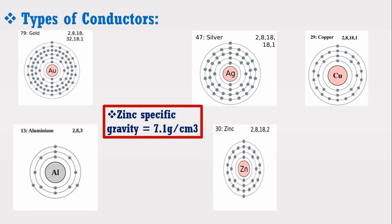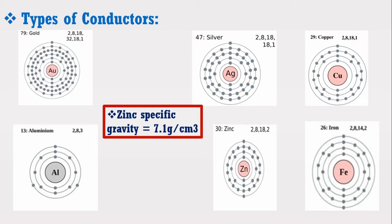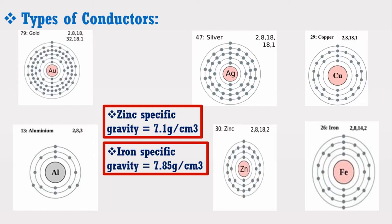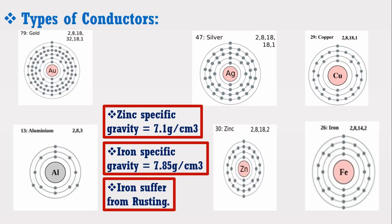Iron also has two electrons in its outer shell, meaning it is also a better conductor than aluminum. However, iron is also not used in the overhead transmission line. The reason is that iron has a very high specific gravity of almost 7.85 grams per centimeter cube. Due to this high specific gravity, its weight will be very high, which requires poles and towers of greater strength to carry its weight. This will further increase the total cost of the transmission line. Therefore, iron is also not used in the transmission line.